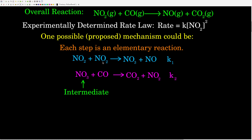NO2 plus NO2 is the same thing as 2NO2, so we write the coefficient as 2. The rate for this first step would be rate equals K1 times the concentration of nitrogen dioxide squared. For the second step, the rate would be K2 times the concentration of nitrogen trioxide times the concentration of carbon monoxide. That's the first thing.